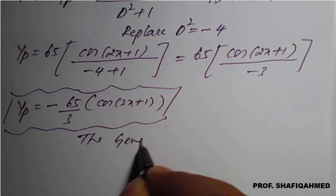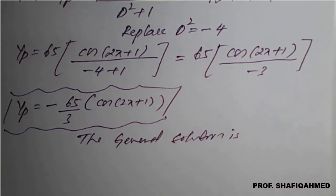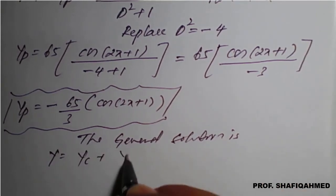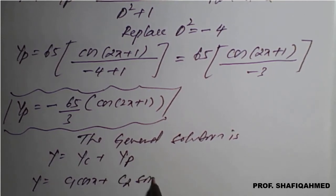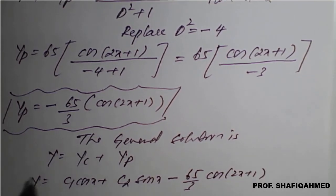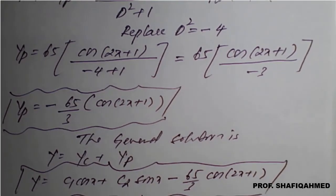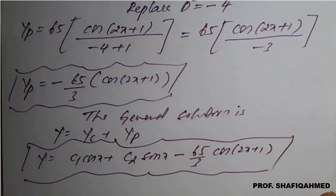The general solution is y = yc + yp. Therefore, y = c1·cos(x) + c2·sin(x) - (65/3)·cos(2x + 1). This is the required general solution of the given non-homogeneous differential equation.